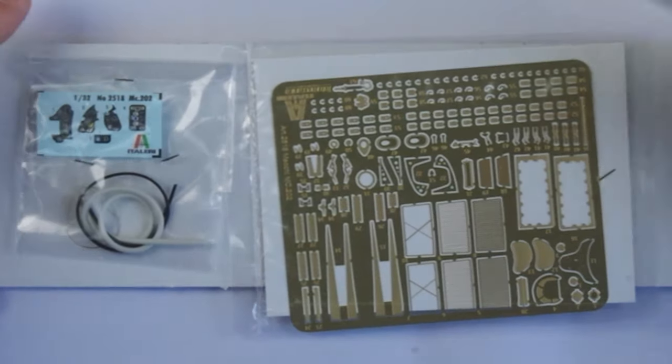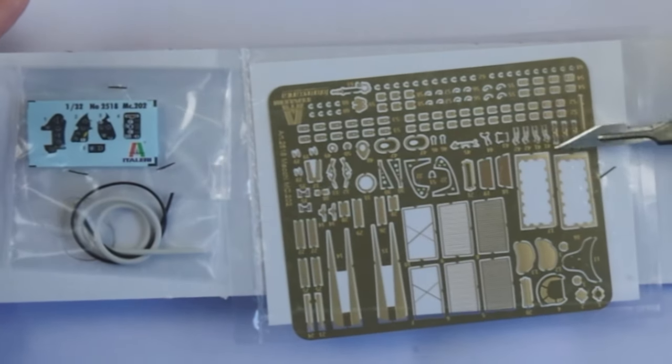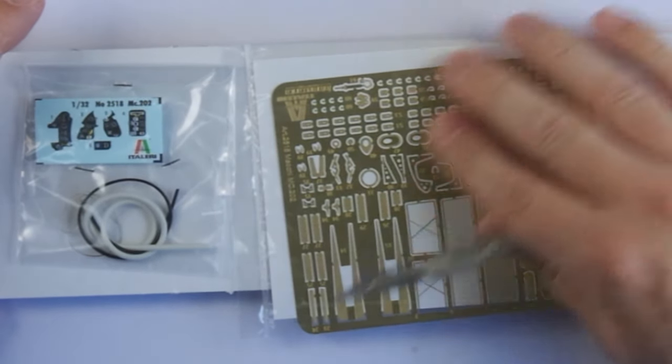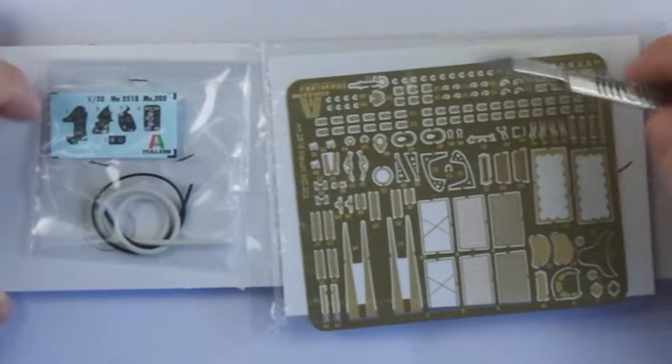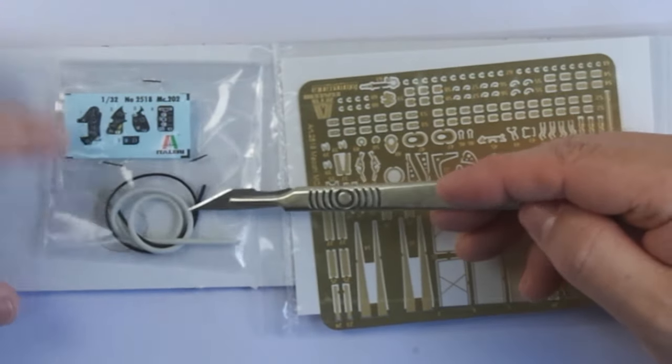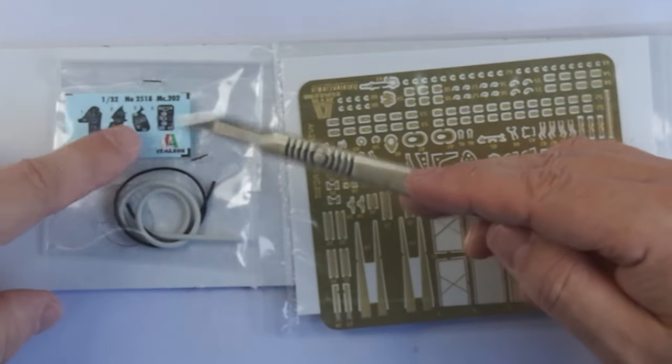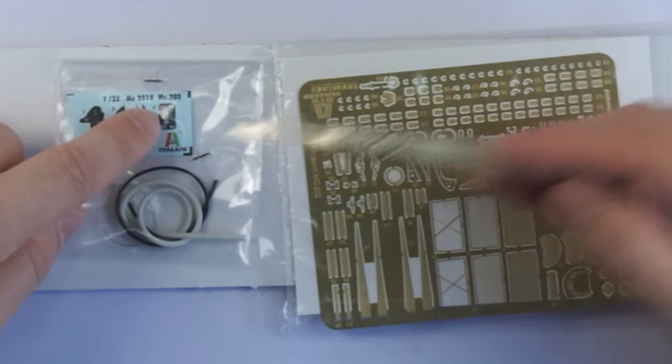Last we have two more bags containing the detail items, specifically the pretty large photo-etch fret, which is a really nice addition in this scale. And then the last contains various wire and tubing for the engine, as well as the 3D decals for the cockpit instrument panel, something I've not used before.